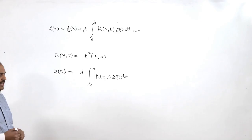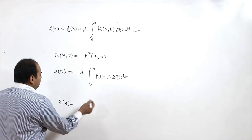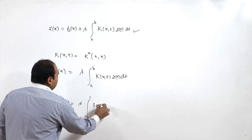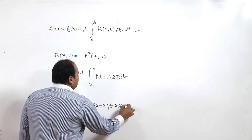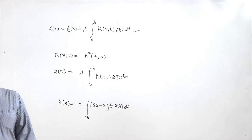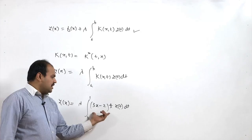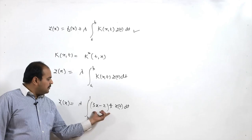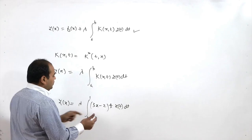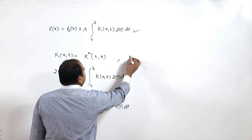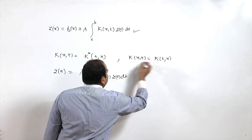For example, we have y(x) = λ ∫[0 to 1] (3x − 2t) y(t) dt. This is an example we discussed in the case of a separable kernel. If you look at it, this is an example of a separable kernel, and this type does not satisfy the symmetry condition.